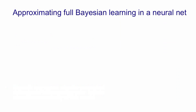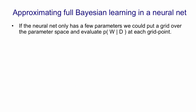So we can approximate full Bayesian learning in a neural net if the neural net has very few parameters. The idea is we put a grid over the parameter space. So each parameter is only allowed a few alternative values.